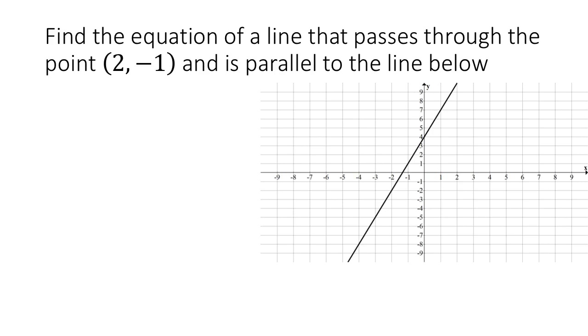Now let's get more specific. In this example, we are told to find the equation of a line that passes through the point (2, -1) and is parallel to the line that is graphed here. Now, to find the equation of a line, we need a point, which we were given, but we also need a slope. And this is where our graphed line comes in.